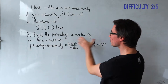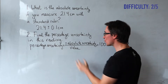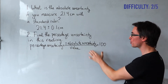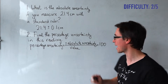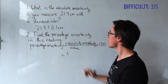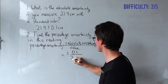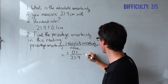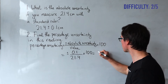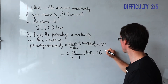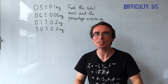Question two: find the percentage uncertainty in this reading. We're going to use the formula that percentage uncertainty is plus or minus the absolute uncertainty divided by the value, multiplied by 100. This gives us 0.1 divided by 21.4, multiplied by 100, which is just plus or minus 0.5% to one significant figure.